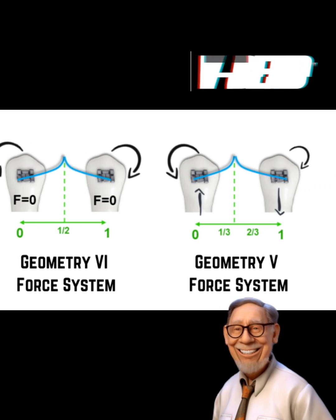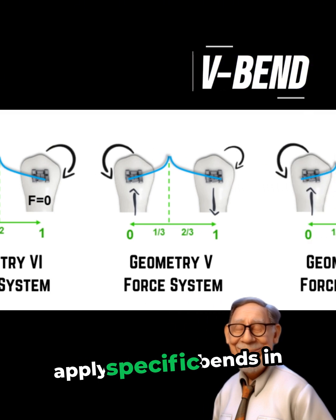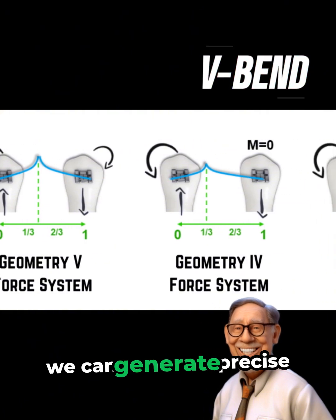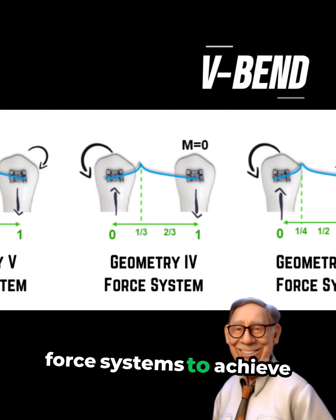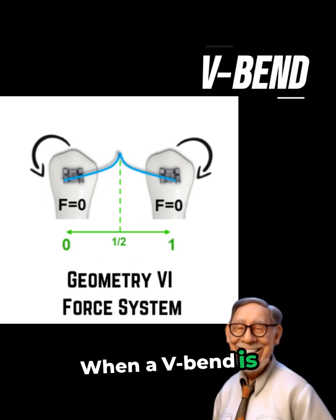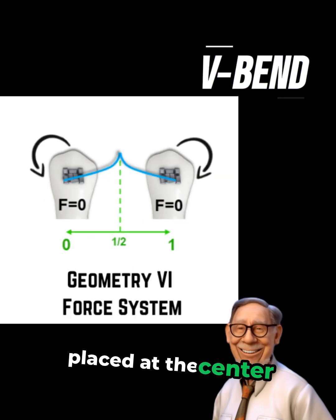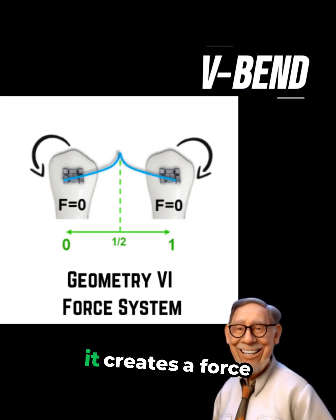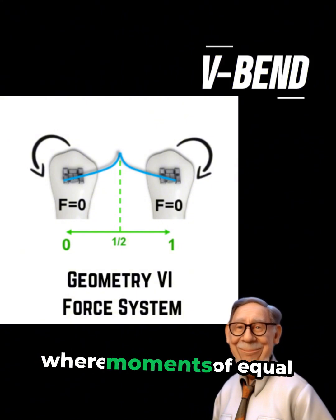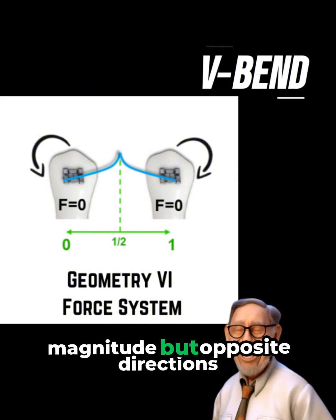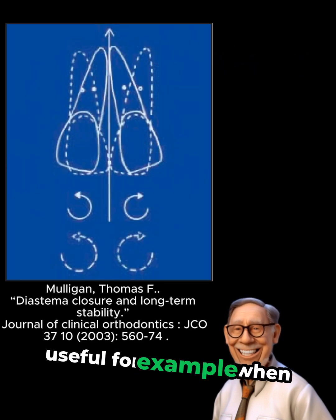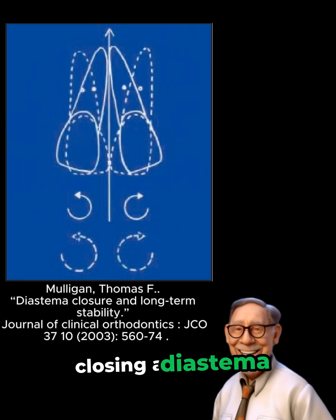For instance, by learning how to apply specific bends in the wire, such as the v-bend, we can generate precise force systems to achieve targeted tooth movements. When a v-bend is placed at the center between two brackets, it creates a force system similar to geometry 6, where moments of equal magnitude but opposite directions are produced. This can be very useful, for example, when closing a diastema.